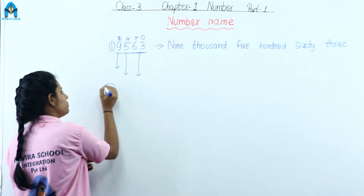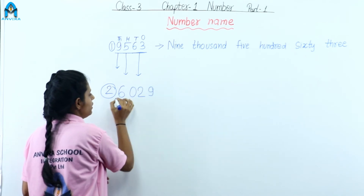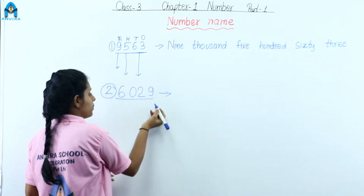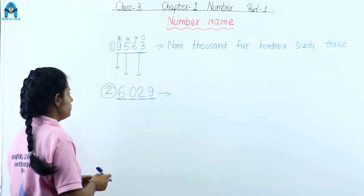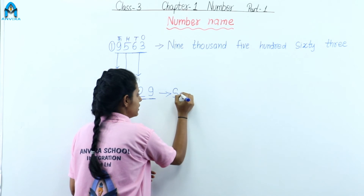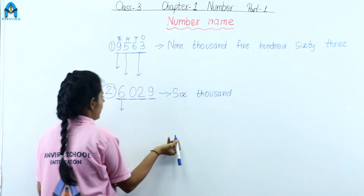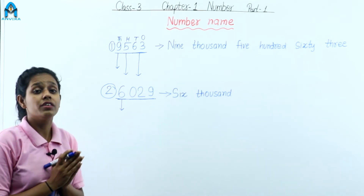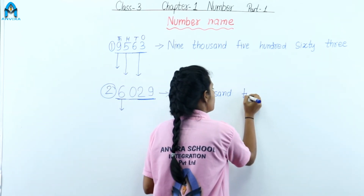Let's have some more examples. Our second example is 6-0-2-9. Let's write the number name. This is a four-digit number. The place values are: ones, tens, hundreds, and thousands. We start with thousands — this is six thousand. Then on the hundreds place, this is a zero, so zero is not written. Then the tens and ones come together. So the number name is six thousand twenty-nine.